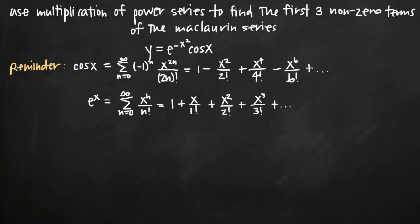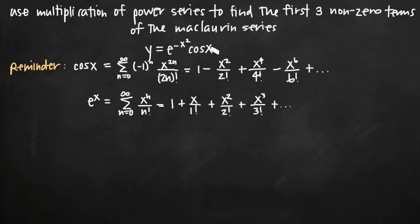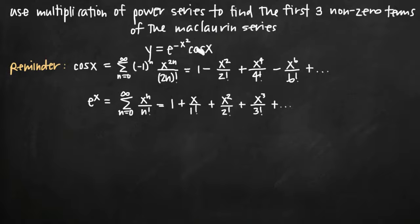Today we're going to be talking about power series multiplication. In this particular problem, we're going to use power series multiplication to find the first three non-zero terms of the given Maclaurin series. The Maclaurin series we've been given is y equals e to the negative x squared times cosine of x. We'll do this by recognizing that we have two functions — e to the negative x squared and cosine of x — that are already well-known Maclaurin series.